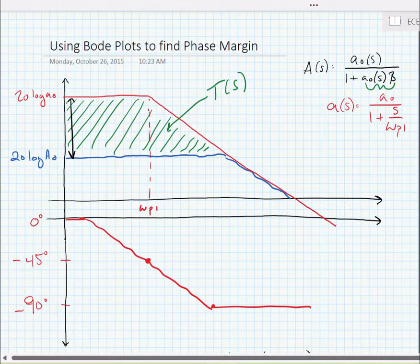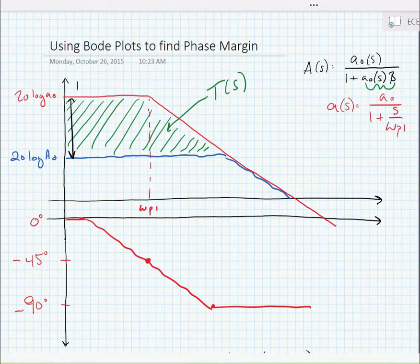If we look at close to dc, the difference between the two curves is 1 plus a0 times beta. That's our dc loop gain.